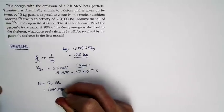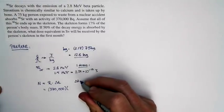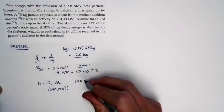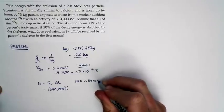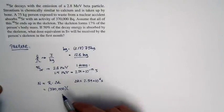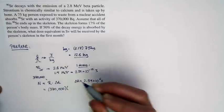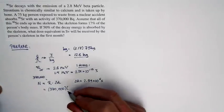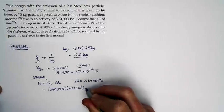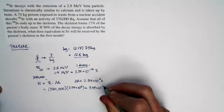So we have 370,000 decays per second times the time interval. Well, the time interval is one month. One month, if we convert that into seconds, is 2.59 times 10 to the sixth seconds, assuming a 30-day month. So here's how much time we have, the decay rate is 370,000 Becquerels, and so we can calculate the number of decays. It's 370,000 times 2.59 times 10 to the sixth, and so we end up with the total number of decays is 9.59 times 10 to the 11th decays.